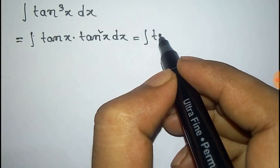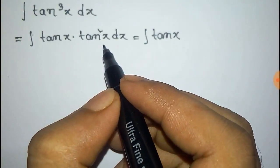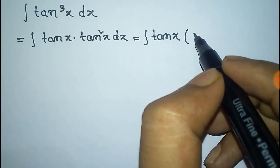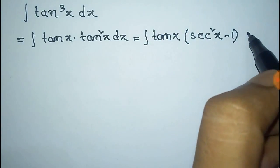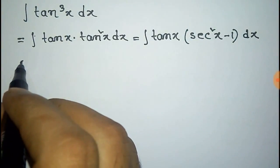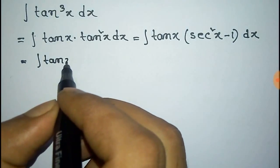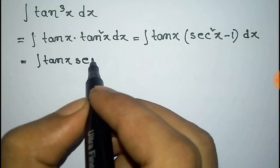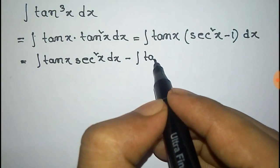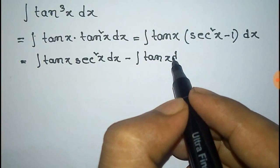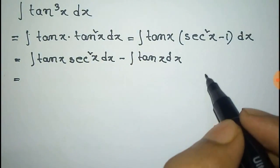And this is equal to tanx into, we can write tan²x as sec²x minus 1. So now this can be written as tanx into sec²x integration dx minus integration of tanx dx.